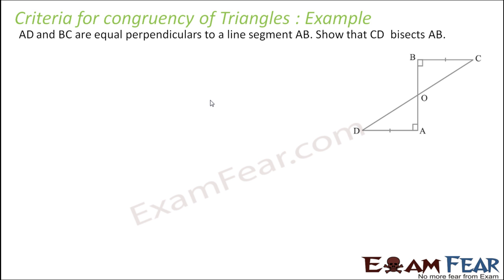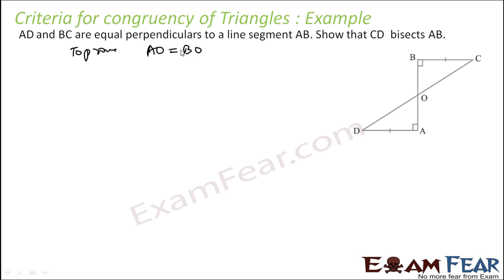Let's take one more example. The question is: AD and BC are equal perpendiculars to the line segment AB — they are two equal perpendiculars. We have to prove that CD bisects AB, meaning we have to prove that AO is equal to BO.